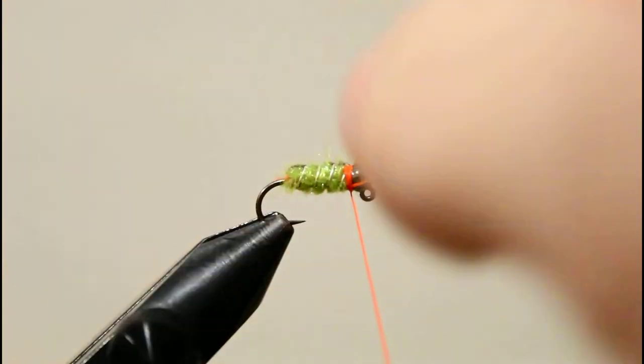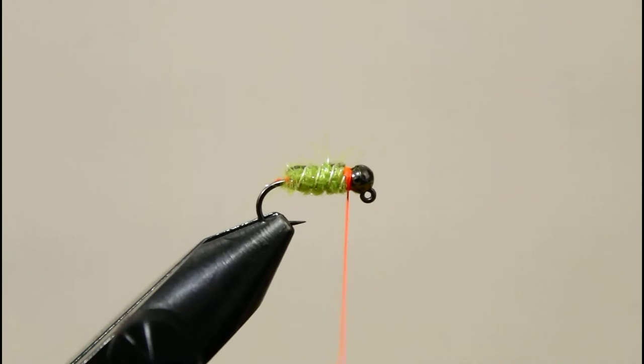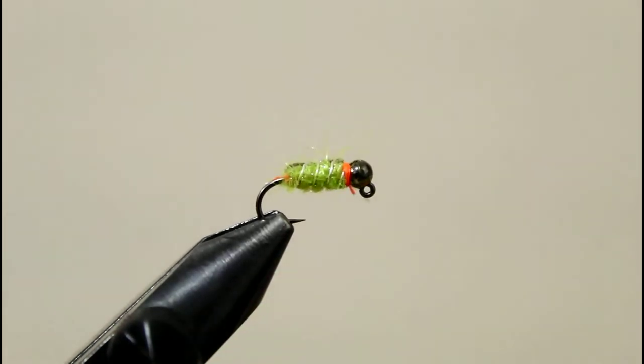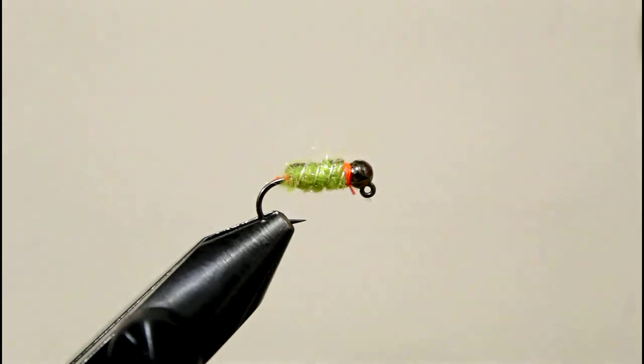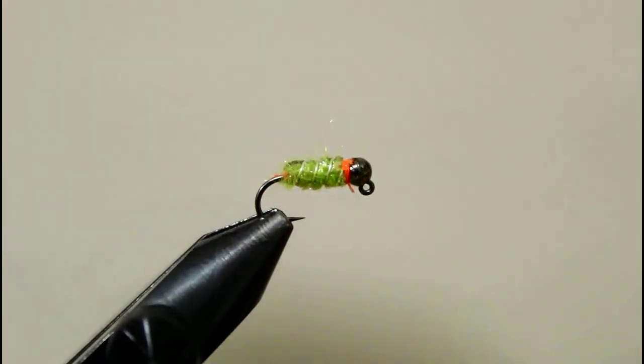To finish it you can put UV resin on. I put some Sally Hansen's on, just a little bit of a dab, nothing too special. We'll just take this, put on the bodkin, and put it right on those thread wraps.